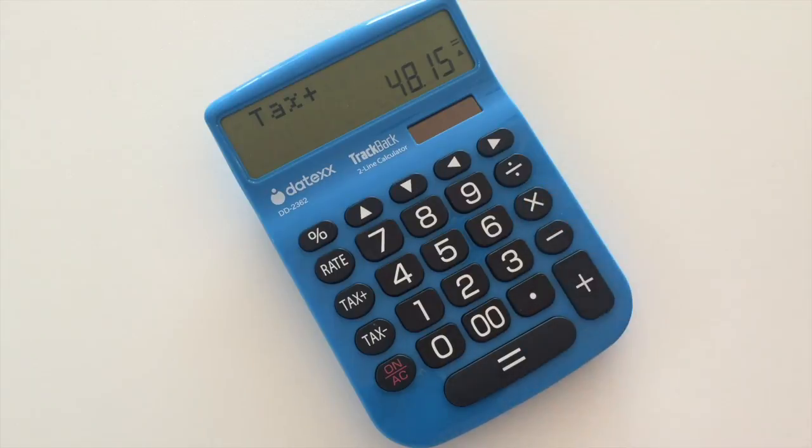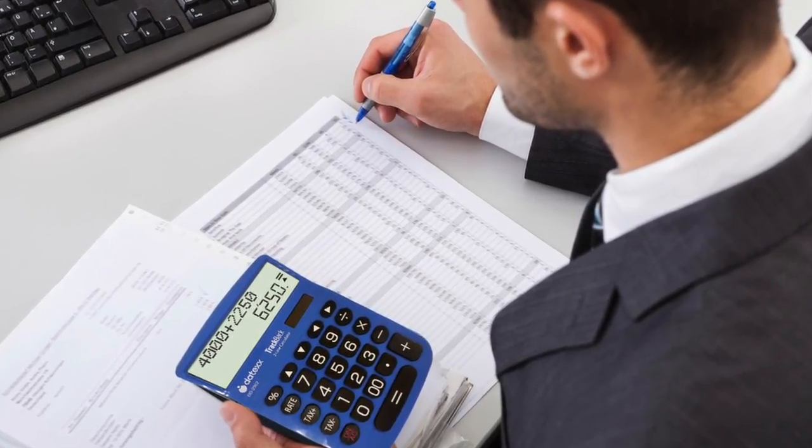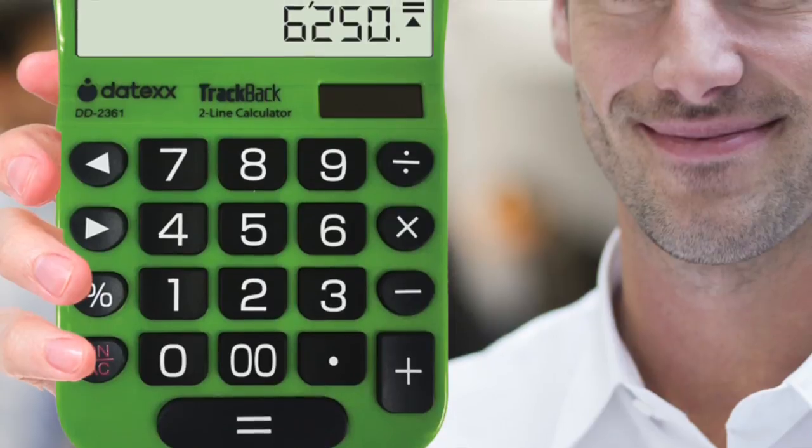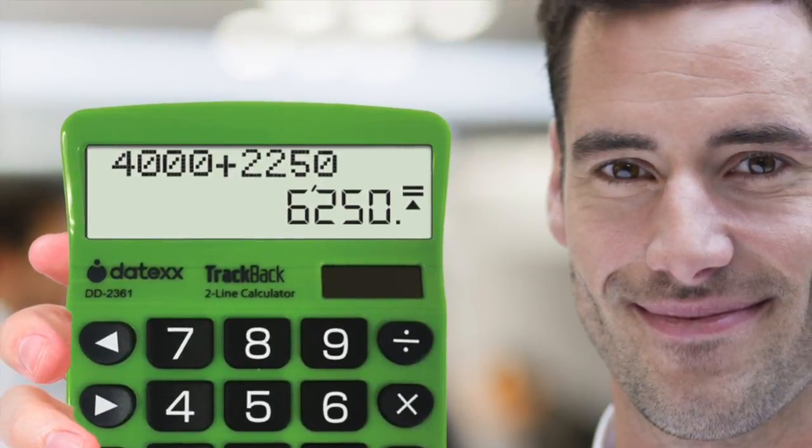The two-line LCD display clearly shows exactly what you need to enter on the top line and provides you with the results on the bottom line. So you can always be sure of your numbers and never lose your place.